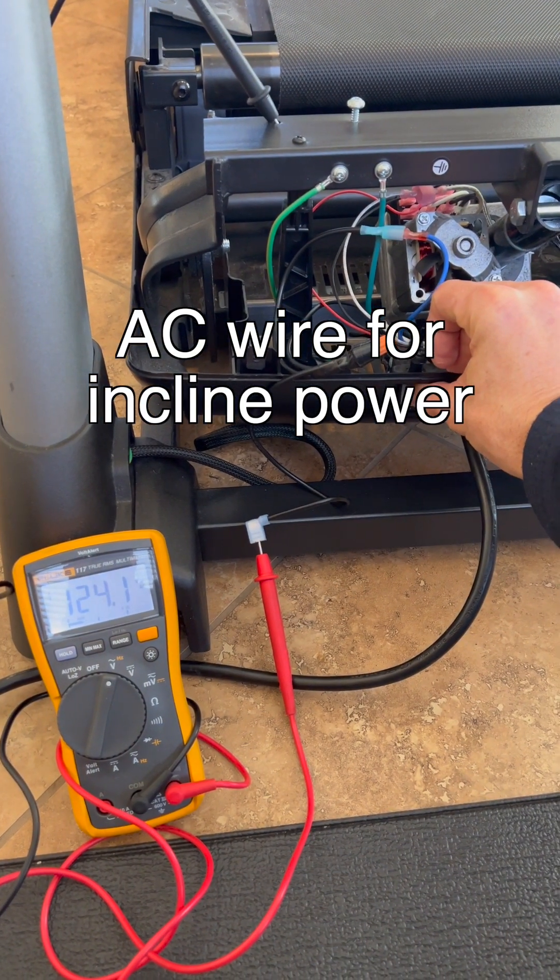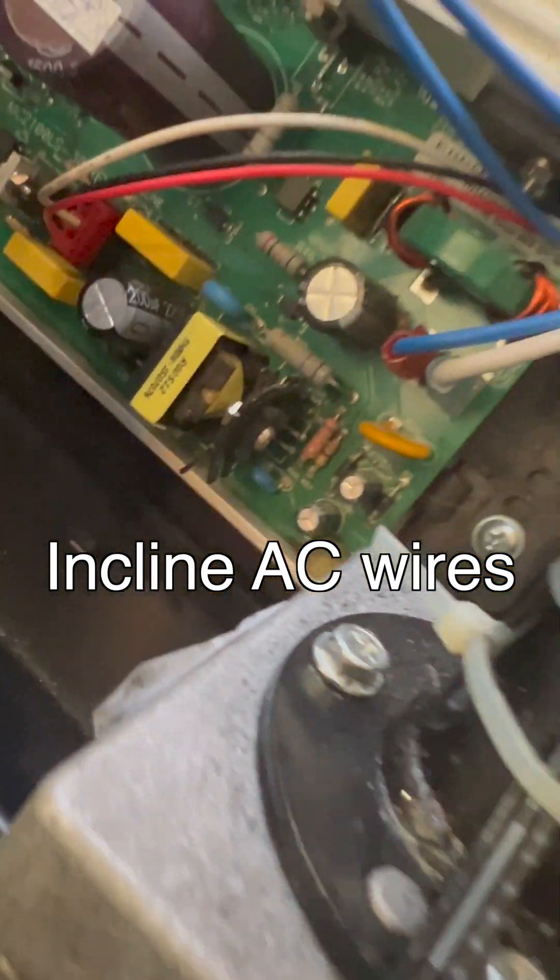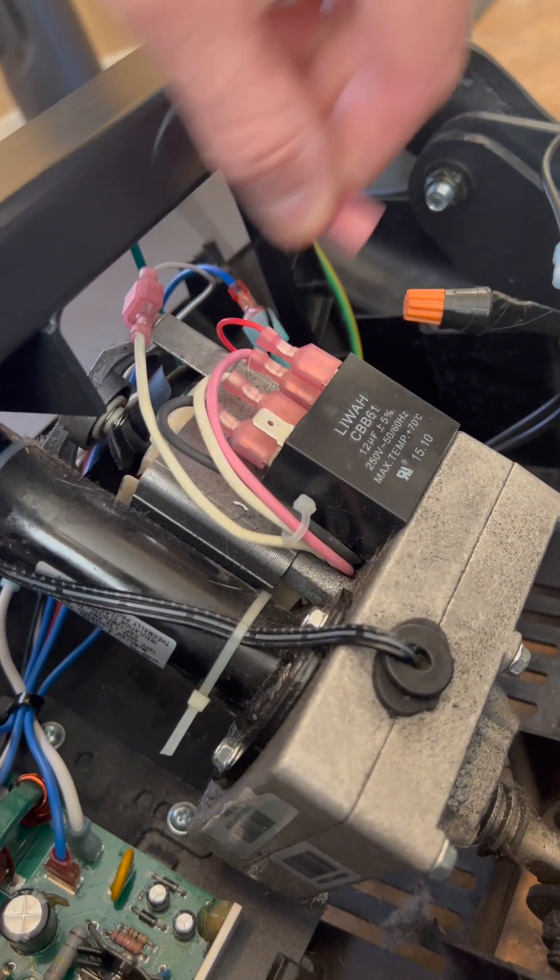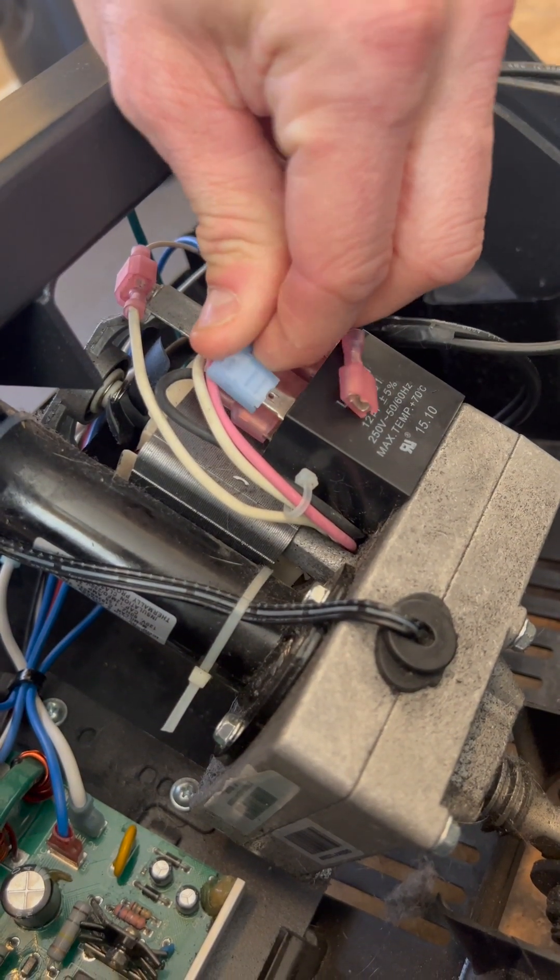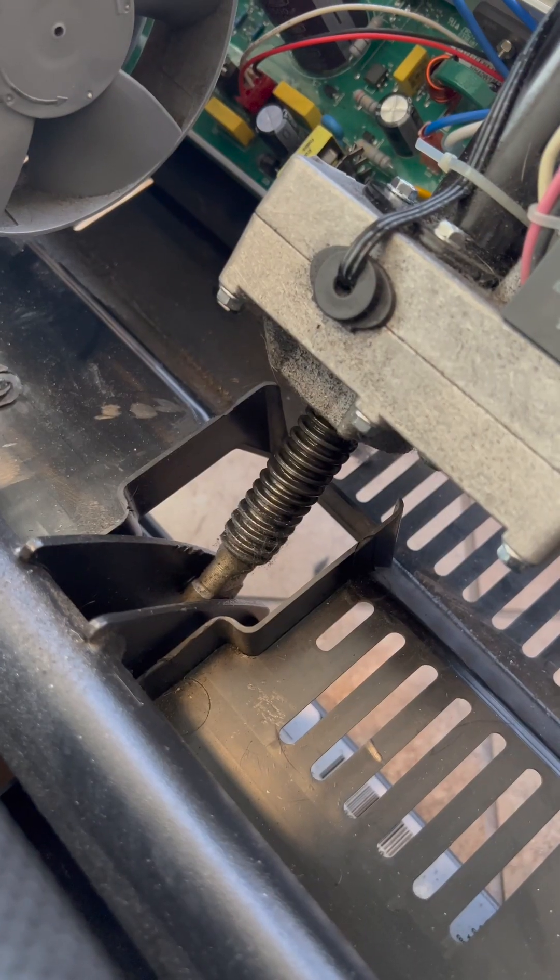Here I am testing the new run for the incline power switch which shows 120 volts. In a working scenario, the display console will send a small voltage reading of 5 volts down the wire and tell the control board up or down which then turns into AC power for the motor.